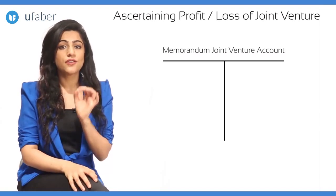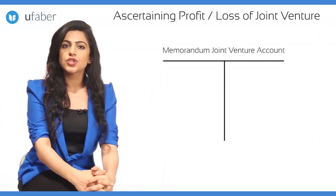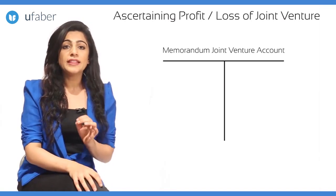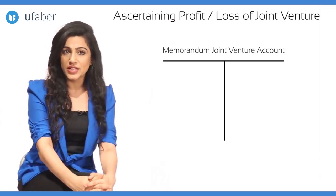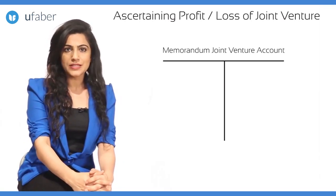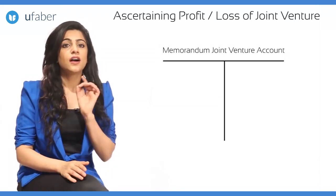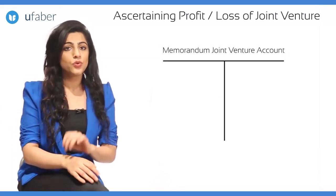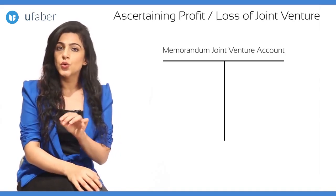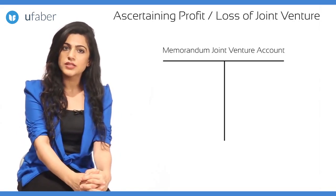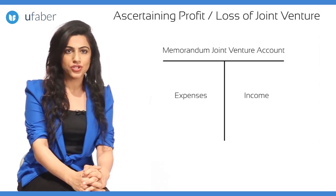The memorandum joint venture account is a rough statement prepared by the co-venturers for determination of venture profit when they do not maintain full records of venture transactions in the books of accounts. Unless this memorandum account is prepared, the co-venturers cannot compute venture profit. This account is used for calculation of profit or loss by combining all expenses and income of the joint venture.